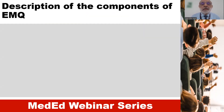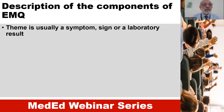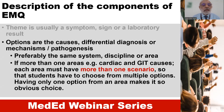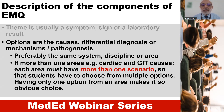Looking at the components of extended matching questions: the theme is usually a symptom, sign, or a laboratory result. Options are the causes, differential diagnosis, mechanisms, or pathogenesis of diseases. Themes are preferably from the same system, discipline, or area.